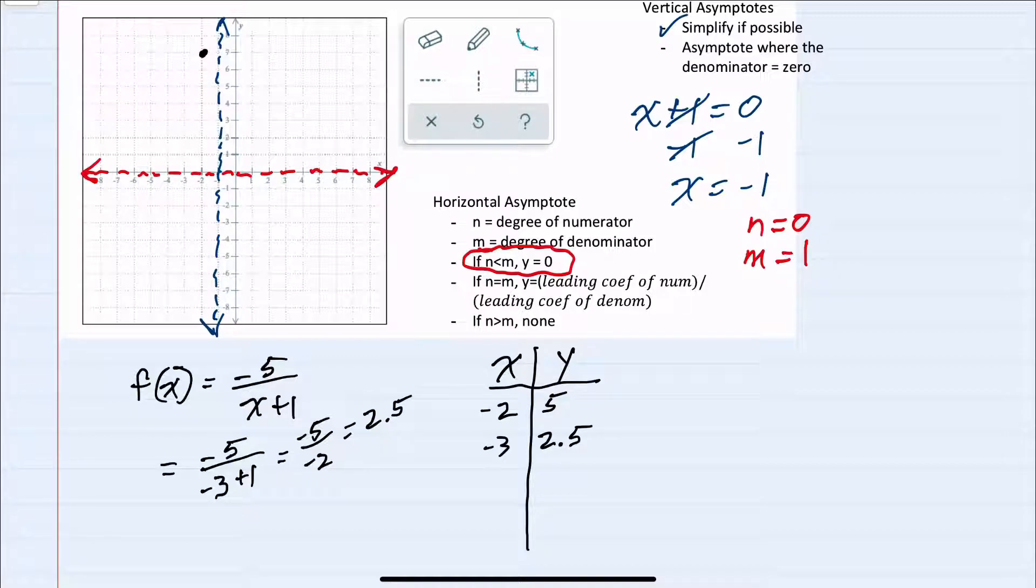We've got two points here, and since I know it's approaching these two asymptotes in that corner, I can connect these and have them moving towards the asymptotes to be a good approximation of the shape of the graph.